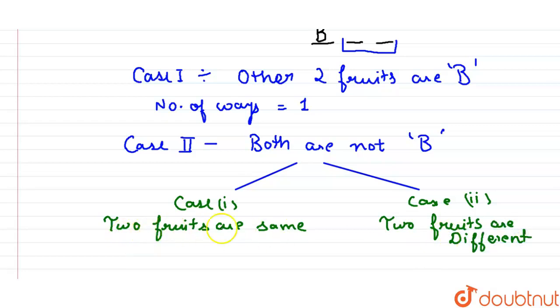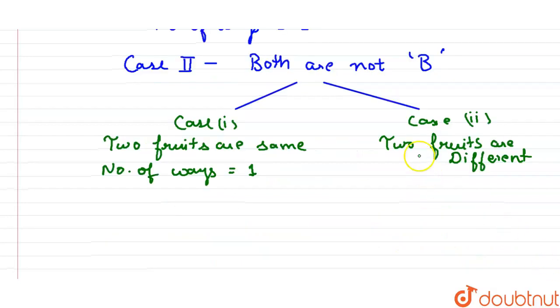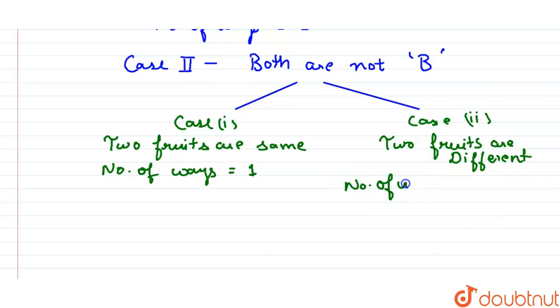So when two fruits are same, then the number of ways will be 1, because both fruits are same. And two fruits are different - when two fruits are different, the number of ways will be 2C1, because we have total two types of fruits. So the number of ways will be 2C1.